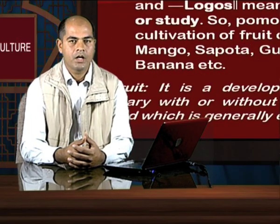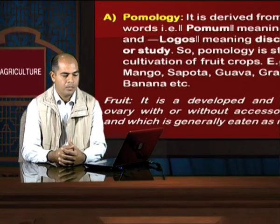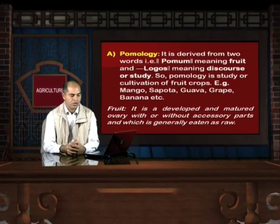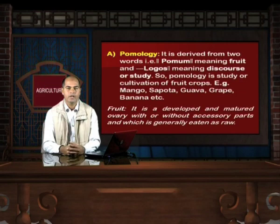The first branch is pomology. It is derived from two words: pomam meaning fruit and logos meaning discourse or study. So pomology is the study or cultivation of fruit crops — for example, mango, sapota, guava, grapes, banana, etc. A fruit can be defined as a developed and matured ovary with or without accessory parts, which is generally eaten raw. The branch which deals with the cultivation of fruits is called pomology.